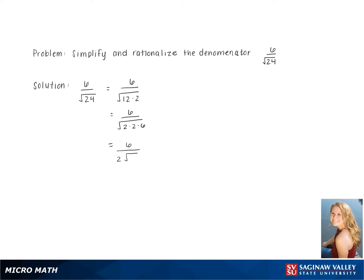We keep the 6 on top and we pull out the 2, giving us 6 over 2 square root 6. We divide 6 by 2, giving us 3 over square root 6.